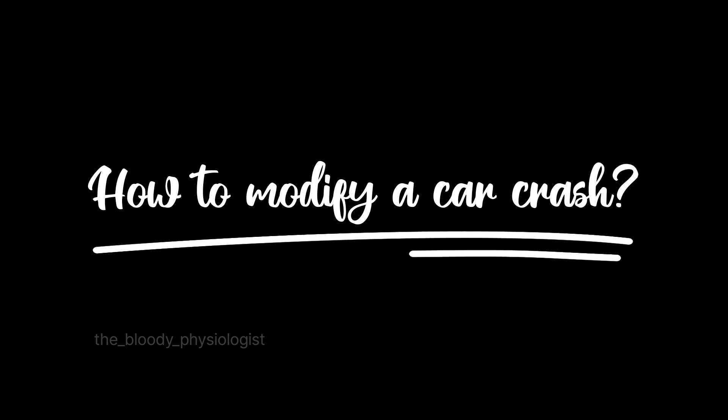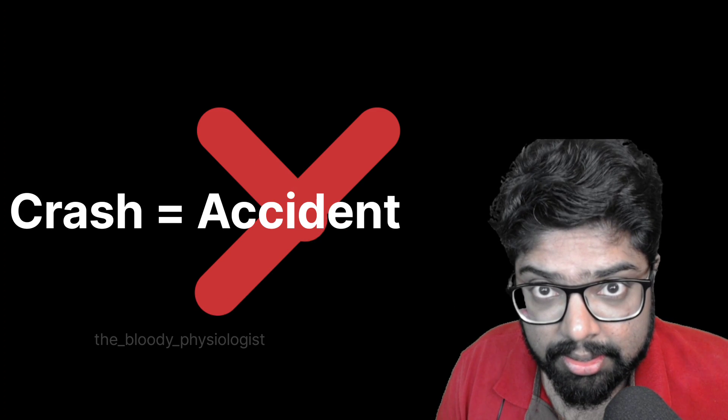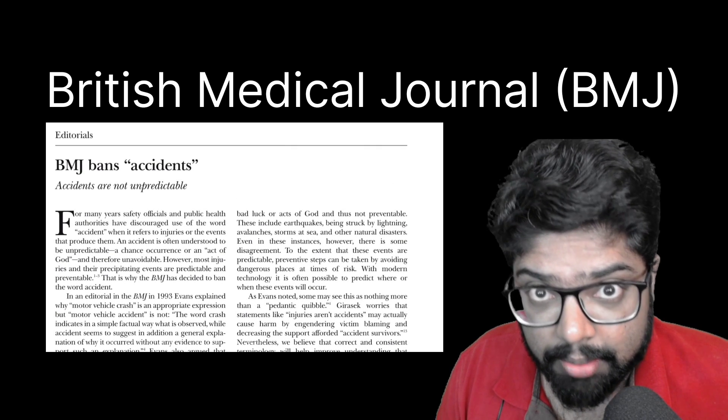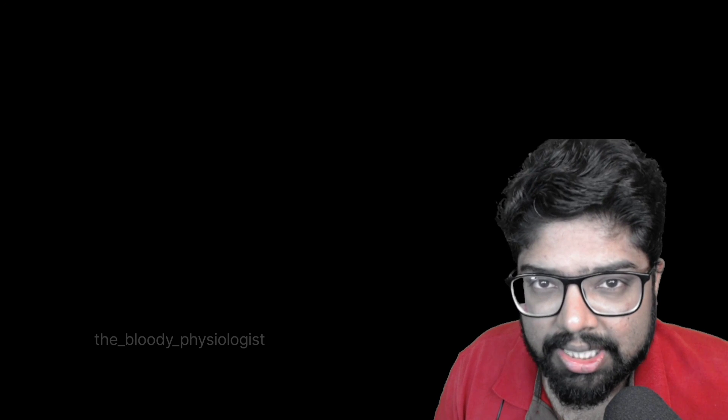This necessitates a need for action to ensure proper occupant safety. The first thing to do is to stop referring to crashes as accidents. This is exactly what BMJ, the British Medical Journal, did back in 2001. Referring to crashes as accidents takes away the predictability factor. Realize that it is a crash, it is predictable, and there are modifiers available which can change the outcome of a crash.